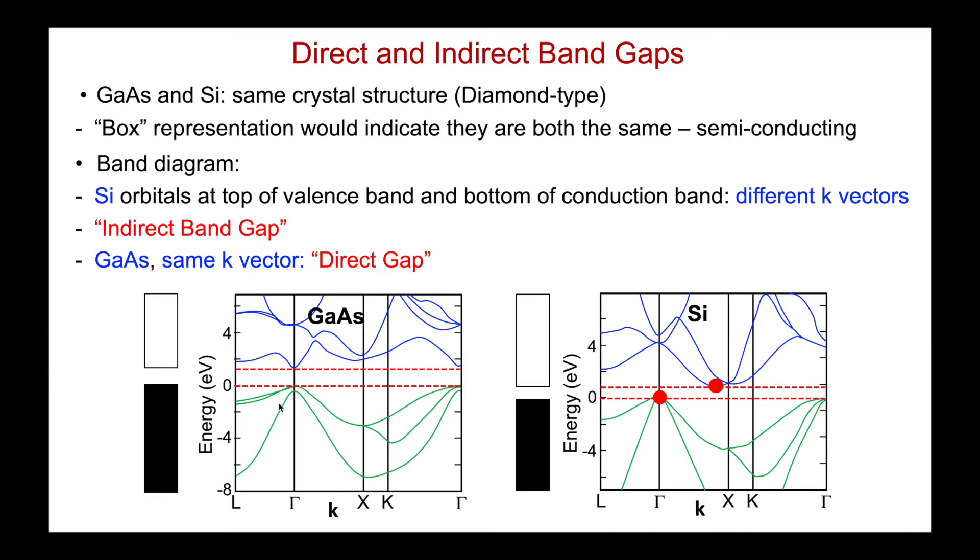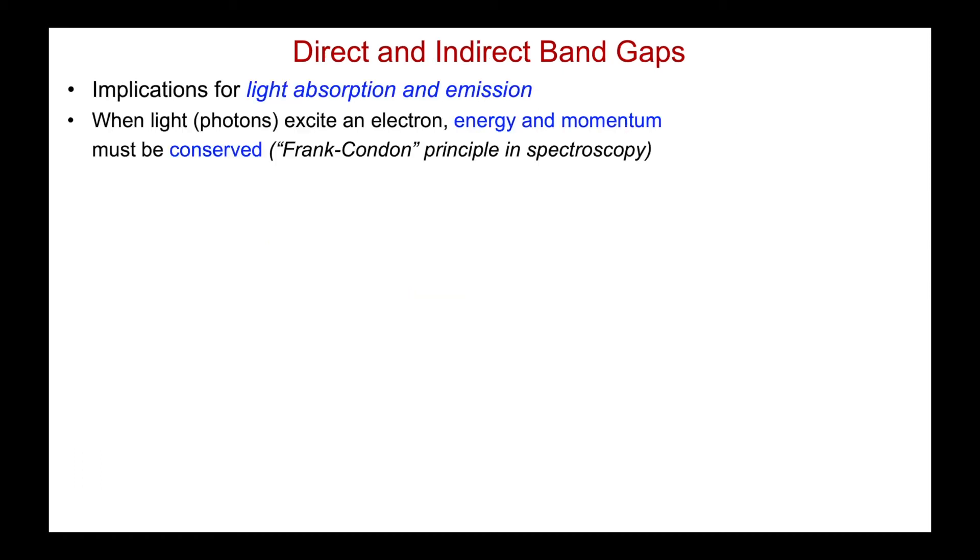And let's just highlight that difference in the k values of those crystal orbitals at the top of the valence band and the bottom of the conduction band. Now for gallium arsenide, things are different. Here's the top of the valence band. Here's the lowest energy conduction band crystal orbital. Let's highlight them. They are at the same k vector. They both actually occur at the gamma point. The kx, ky, kz equals zero, zero, zero. There's no change in momentum when I excite an electron from the valence band to the conduction band.